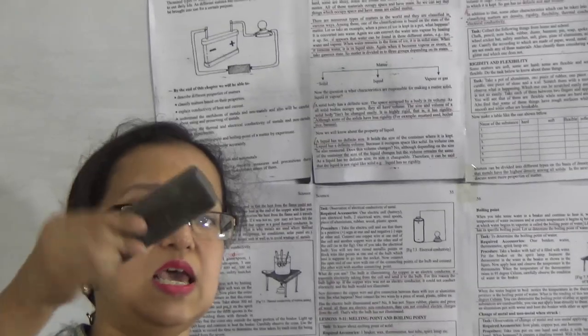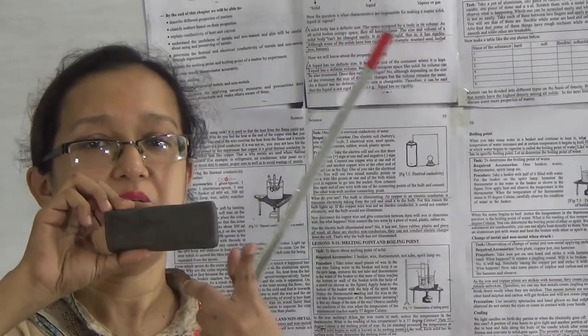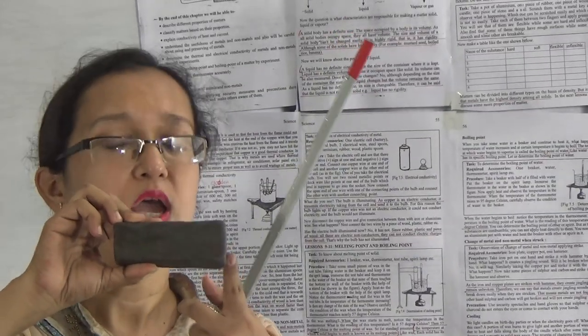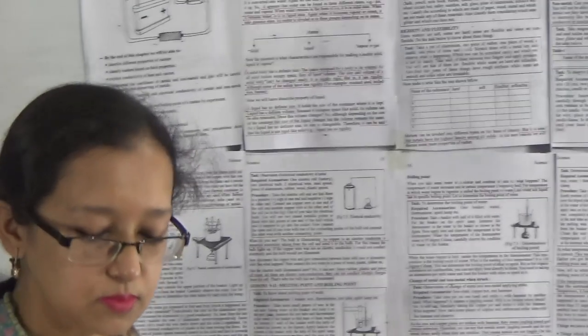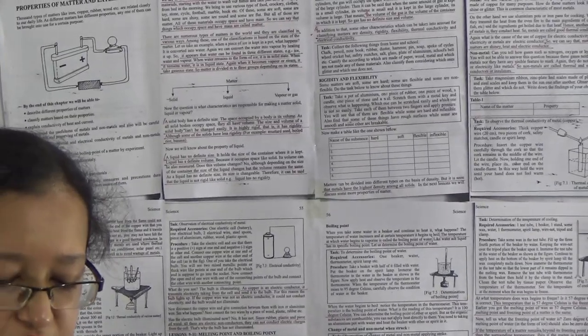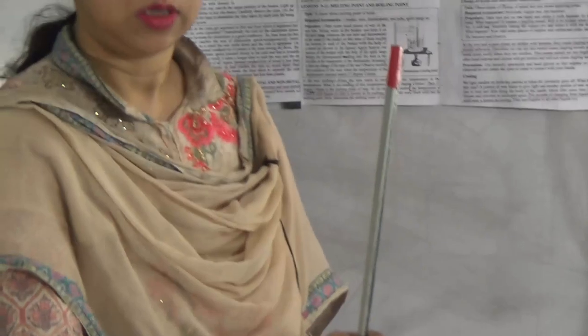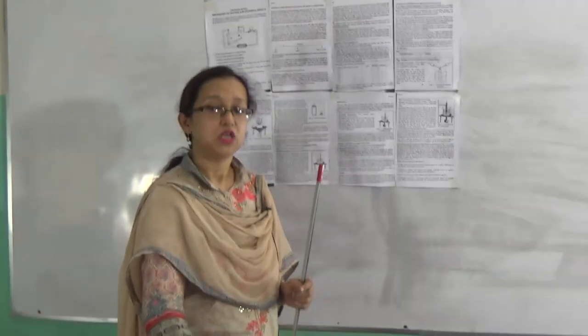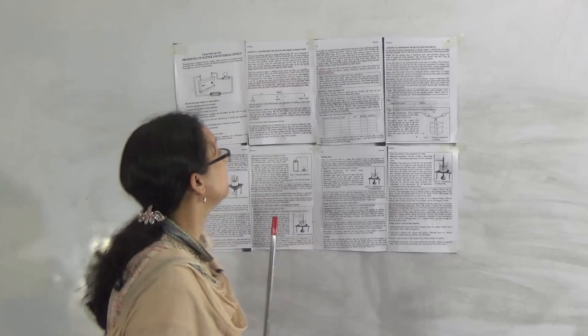This white bone, for example, is also matter because it takes up space and has mass. It has size, shape, and volume. When I put it on the table, it occupies that space. So it is one kind of matter.